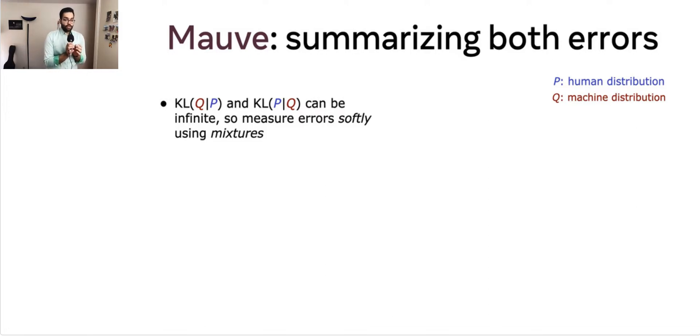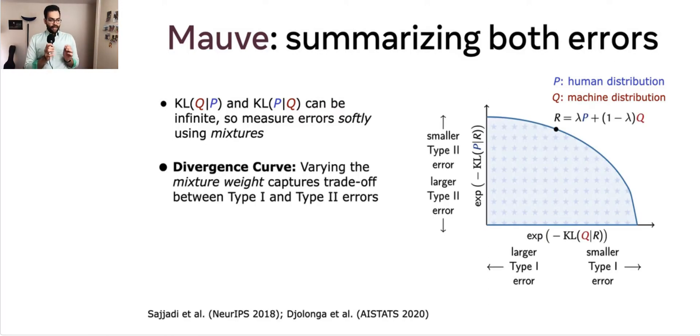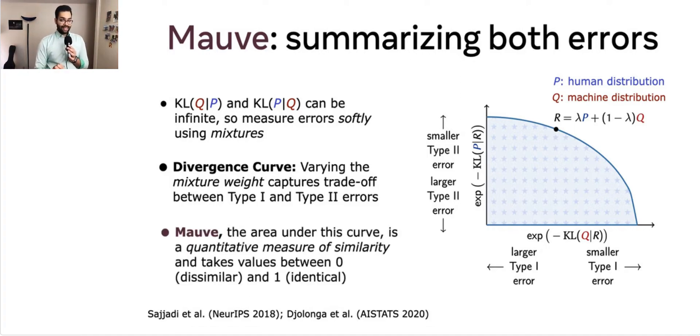Instead, we propose to softly measure the KL and the reverse KL divergences with a mixture of P and Q. By varying the mixture weight, we get a family of type 1 and type 2 errors, which can be plotted as a curve, shown here on the right. We call this the divergence curve and it captures the full trade-off between type 1 and type 2 errors. This is reminiscent of the notion of precision recall curves for generative models, introduced by Sajadi et al. in the context of computer vision and then extended by Jalonga et al. We define MAUVE as the area under this curve. It summarizes the complete trade-off between type 1 and type 2 errors in a single scalar. It takes values between 0 and 1, 1 being P and Q are identical and 0 meaning they are completely dissimilar.